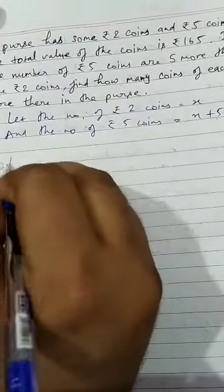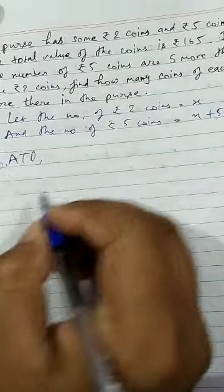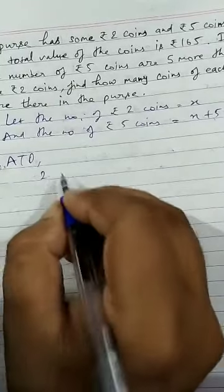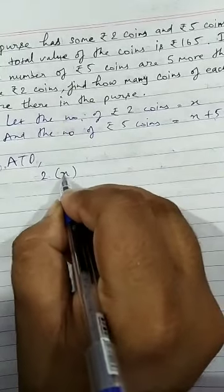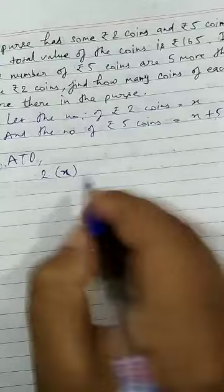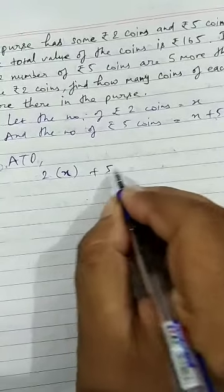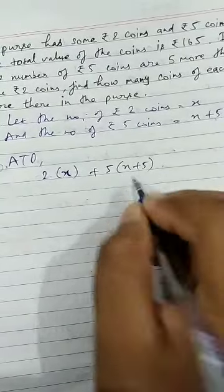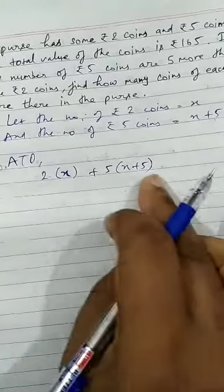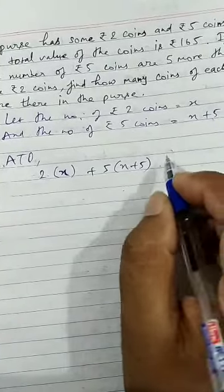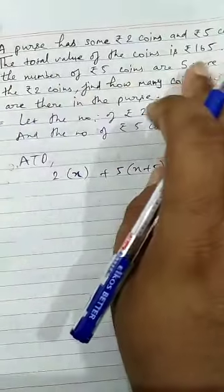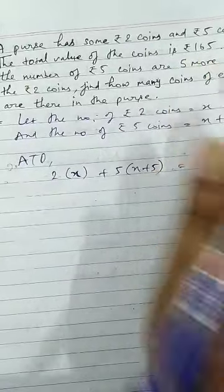So according to question, 2 rupee coins are X and 5 rupee coins are X plus 5. So they are multiplied inside the bracket. And the total value of the money is 165.